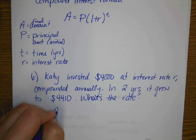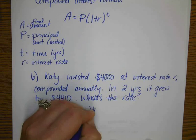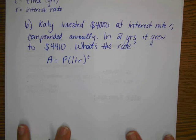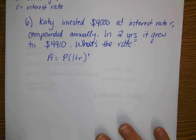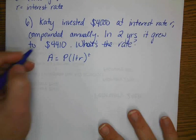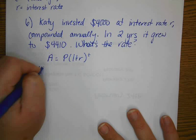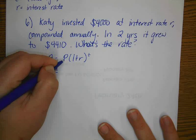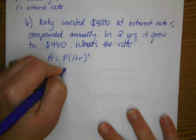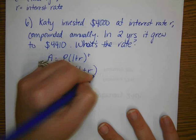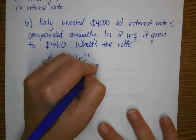Well, we have to write down our formula. So, go ahead and take a minute and plug in what you think goes where. Please pause it to do that. So, our final amount is the amount it ended with, was $4,410. P is the principal amount with what it started with, is $4,000 times 1 plus R. We don't know to the two years.